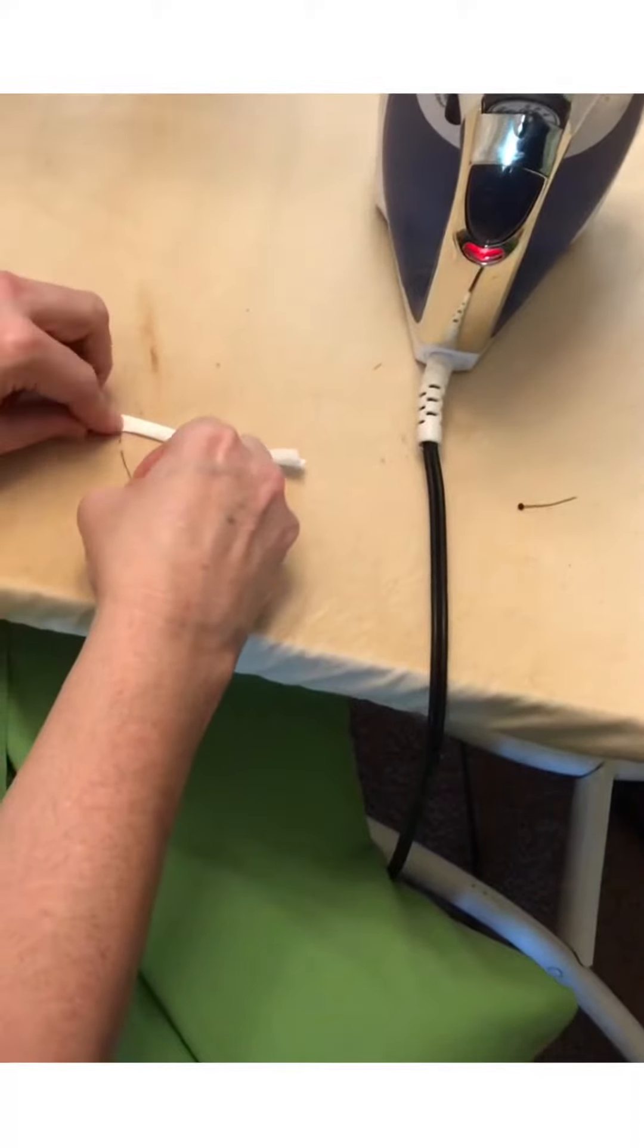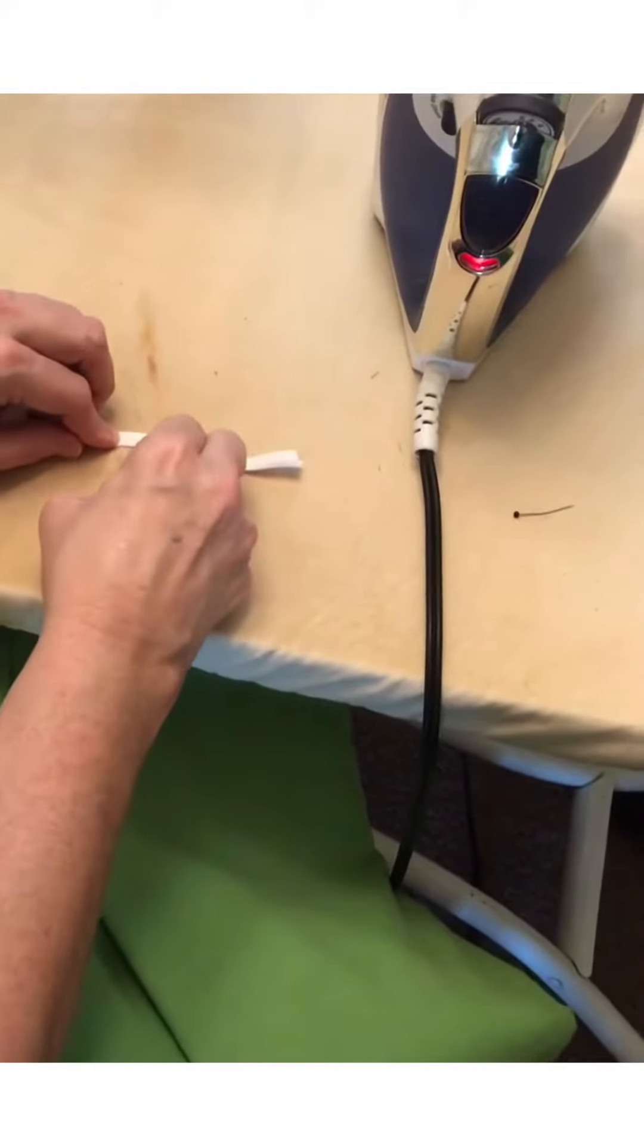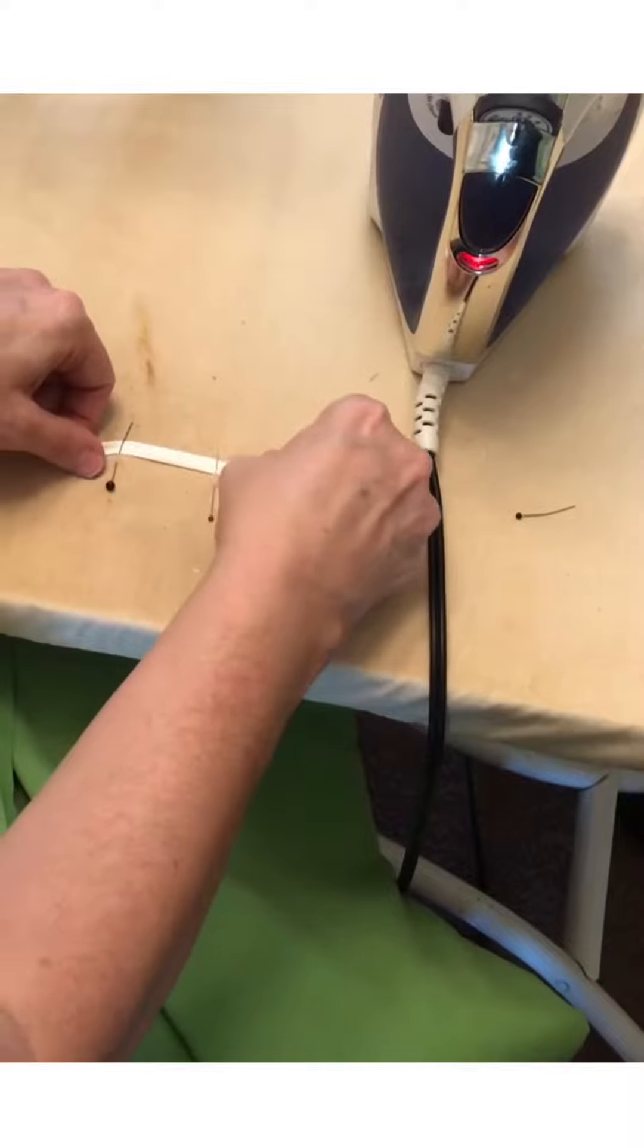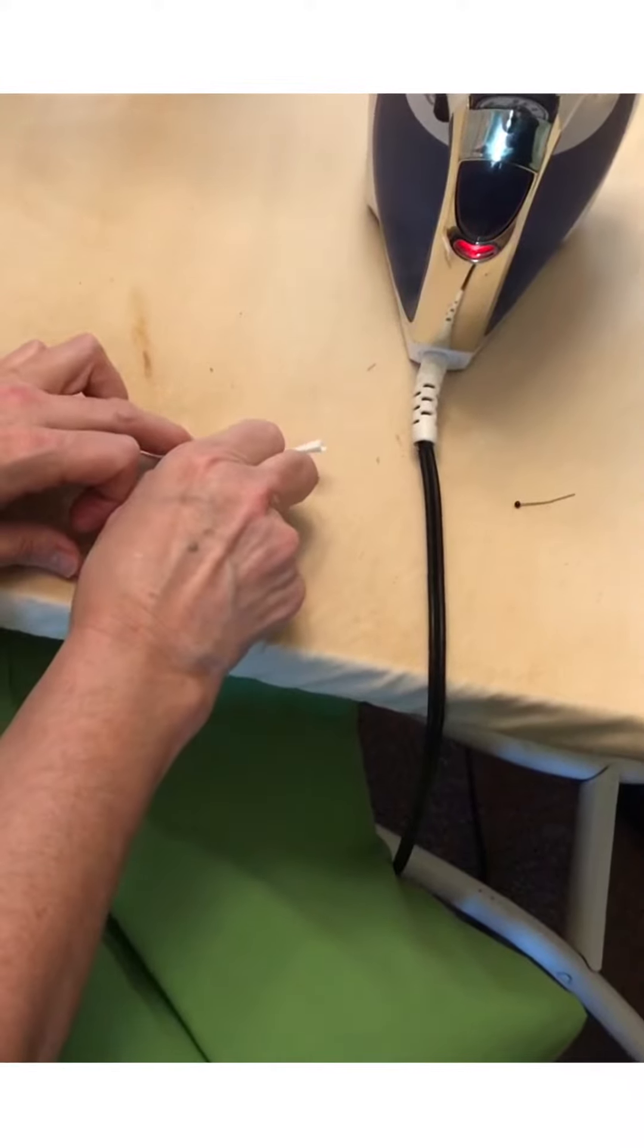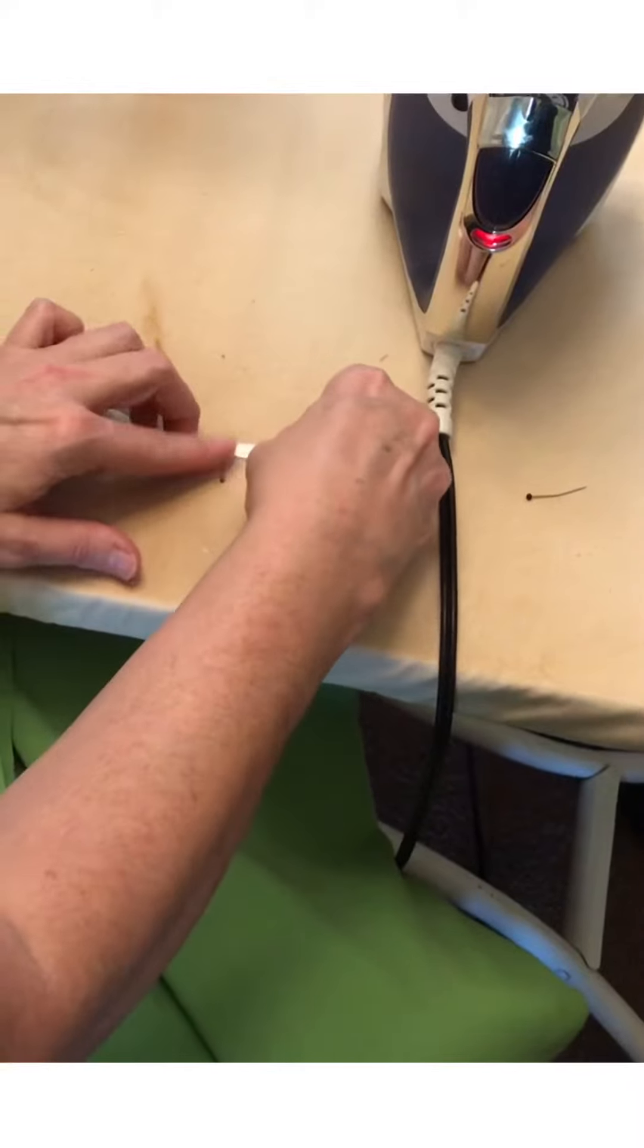So I've got two pins. I basically pin it into the ironing board and I come back up and I go over top of whatever it is I'm wanting to fold. So it could be material, it could be ribbon, in this case it's twill tape.